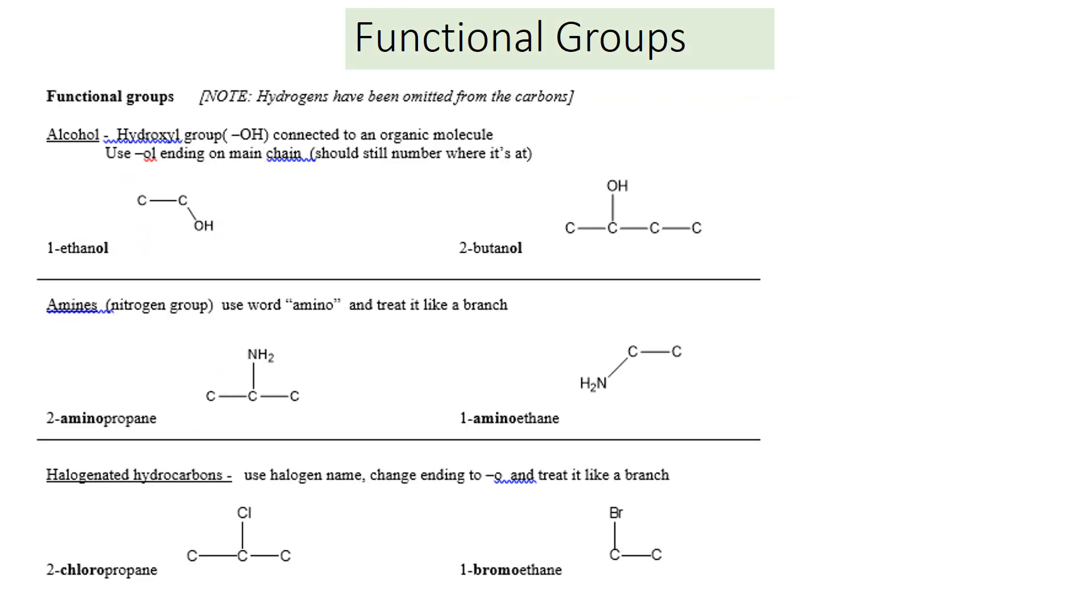Functional groups result when you add elements besides just carbon and hydrogen, usually oxygen or nitrogen. The first one is alcohol. Alcohol has a hydroxyl group, which is an OH. It's important to remember that is not a base. It's not an OH that comes off and makes a hydroxide ion. It's an OH group on the organic molecule.